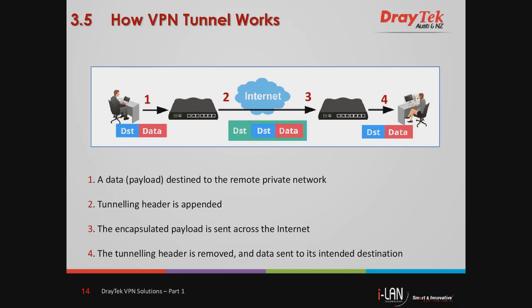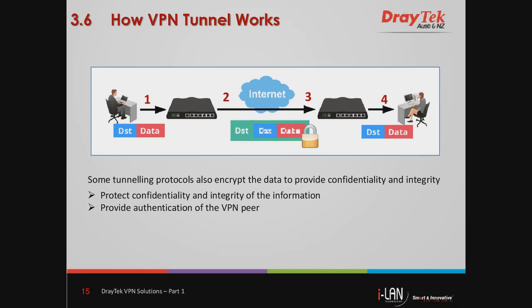This diagram shows how VPN tunneling works. In step one, the data payload is sent from a PC to the destination network. In step two, the router appends a tunneling header to the incoming data packet. This encapsulated payload is sent across the internet to the destination router in step three. Finally, the tunneling header is removed by the destination router and the data payload is sent to its final destination in step four. Some tunneling protocols not only encapsulate the data but can also encrypt it to protect the confidentiality and integrity of the information.